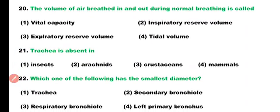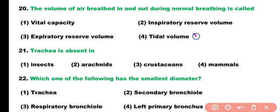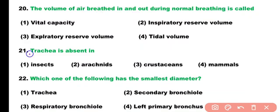Question number 20. The volume of air breathed in and out during normal breathing is called: vital capacity, inspiratory reserve volume, expiratory reserve volume, or tidal volume. Correct answer is option 4. Tidal volume is the volume of air that is breathed in and out during normal breathing.